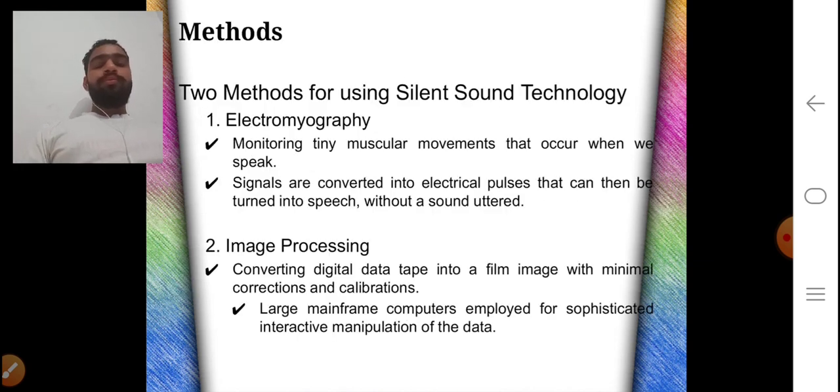So there are basically two different methods for silent sound technology. One is Electromyography and second one is image processing.